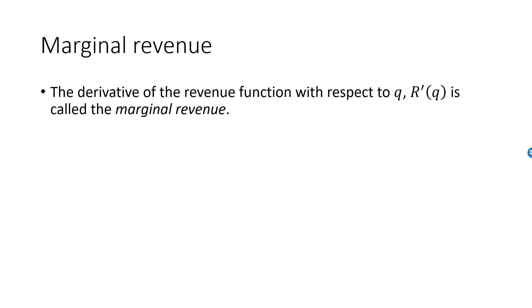The derivative of the revenue function as a function of Q is one of the most important concepts in microeconomics. We name this derivative the marginal revenue, and we think of it as the increase in revenue when the quantity is increased by one unit.